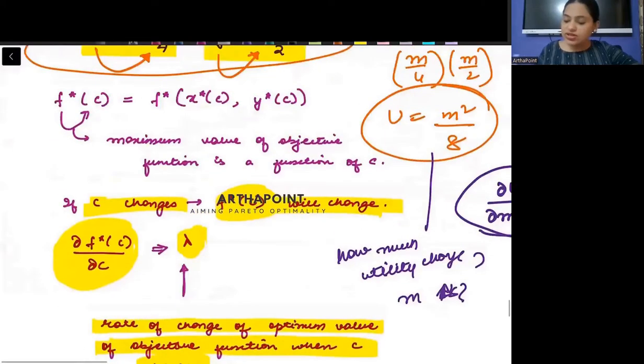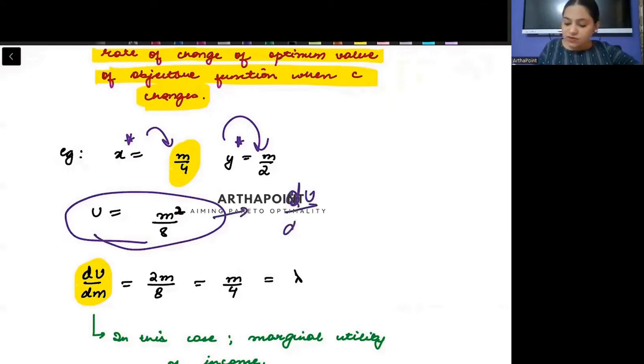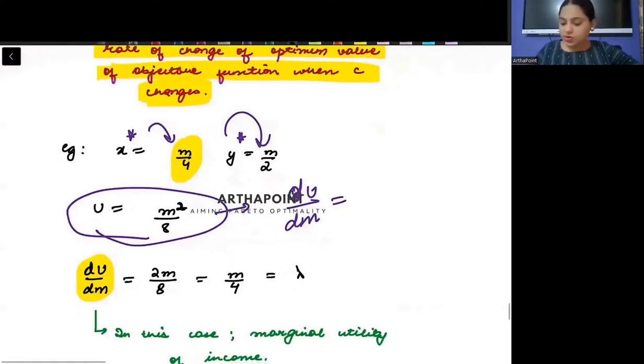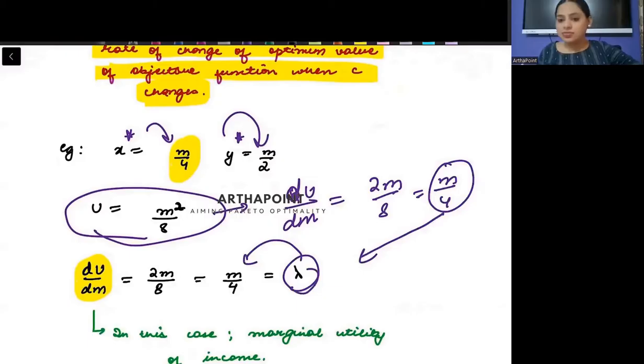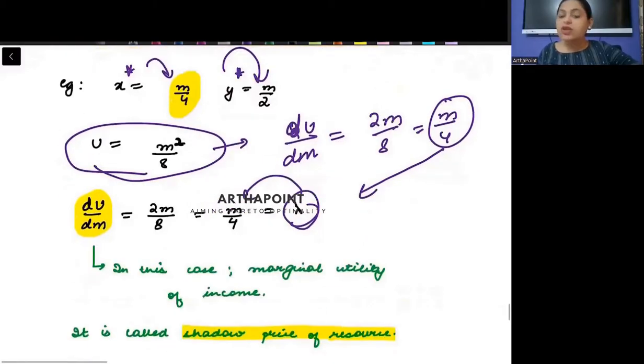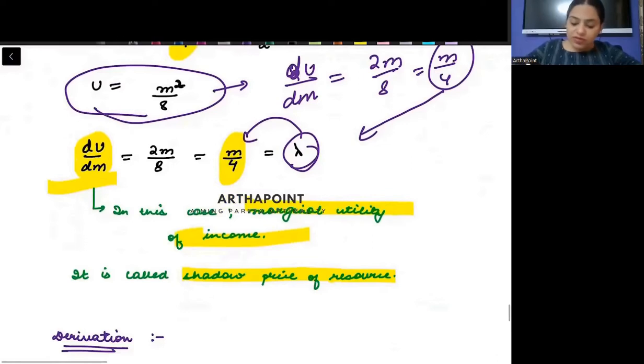So the rate of change of optimal value of objective function when C changes, that is lambda. So in case of our utility, you saw when you see that my X is, if you look at the first example we did, X* was M by 4, Y* was M by 2. So my utility, how much will M² by 8? If I ask how utility changes when M changes, if I differentiate this with respect to M, what will I get? 2M by 8, that means I will get M by 4. But do you remember that my lambda value actually was M by 4. My lambda was actually M by 4. So basically, the lambda already gave me the value of marginal utility of income.